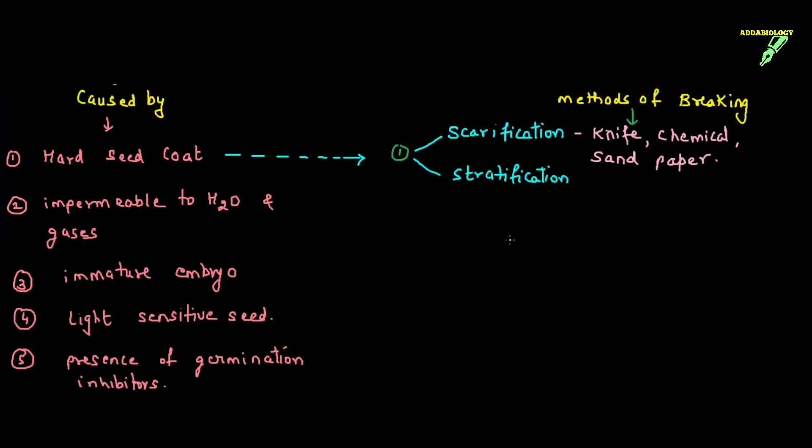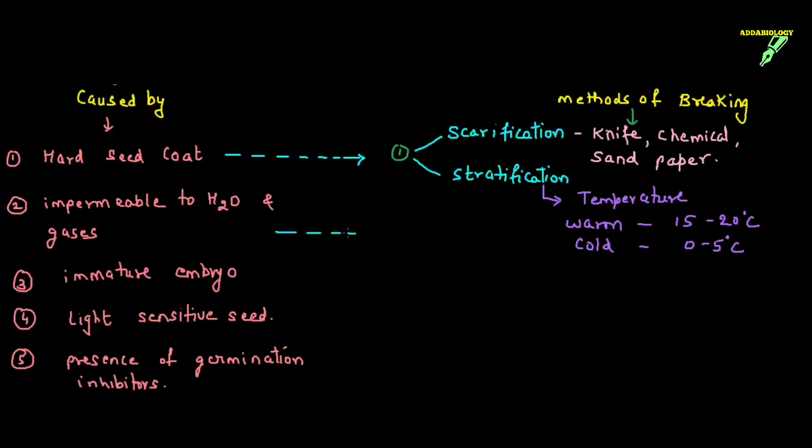Second method is stratification. What is stratification? You make use of temperature. You can use low temperature. Under low temperature, the seed coat shrinks and as a result it can break. Or you could use warmer temperature of 15 to 20 degrees celsius. In warm temperature, the seed coat becomes loose and it can easily break. So scarification and stratification are the two methods for breaking seed dormancy if they are following dormancy due to hard seed coat.